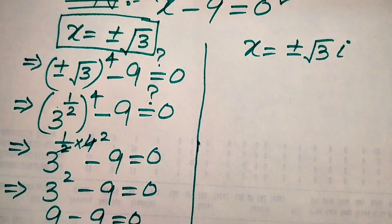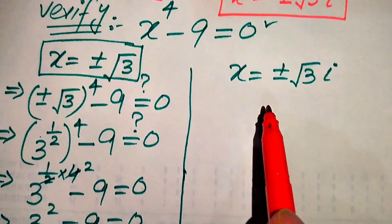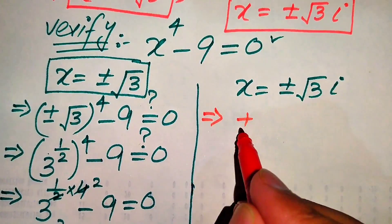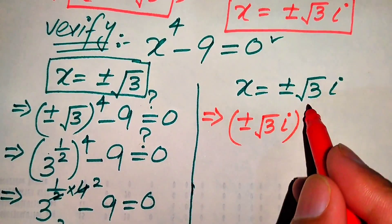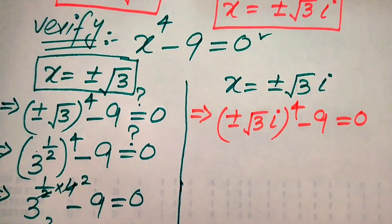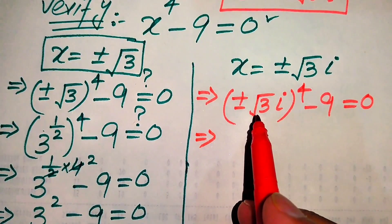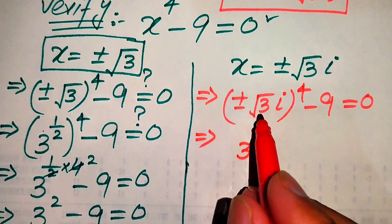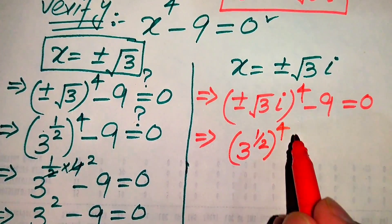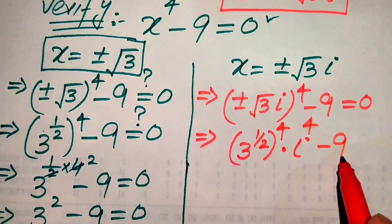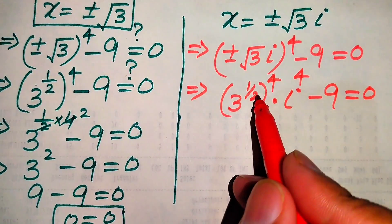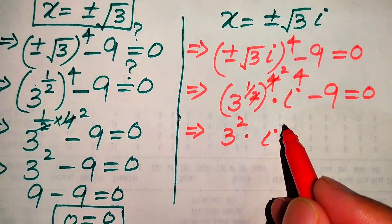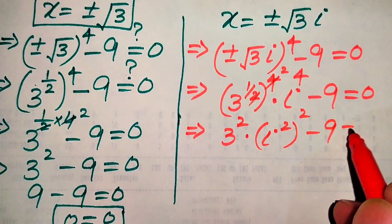Now we verify the second value of x. We substitute x equals plus or minus square root of 3 times iota into the equation: (plus or minus square root of 3 · iota) to the power of 4, minus 9, equals to 0. Again the negative base with an even exponent becomes positive. We write square root of 3 as 3 to the power of 1/2, whole power 4, times iota to the power of 4, minus 9 equals 0. Multiplying the exponents gives 3 squared times iota to the power of 4. We rewrite iota to the power of 4 as (iota squared) squared, minus 9 equals 0.